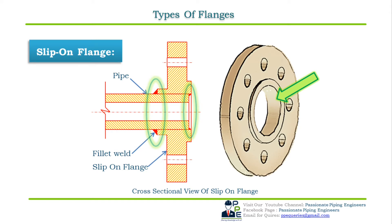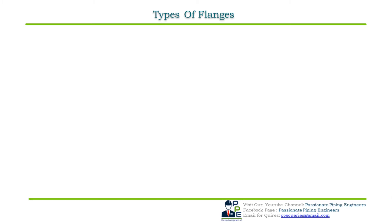When combining slip-on flanges with elbows or tees, it is not possible in general because fittings like elbows and tees have no straight ends to complete the slide. They can be used with long tangent elbows and reducers, but this is not general practice. Slip-on flanges are preferred in low pressure, low temperature applications up to 200°C and in non-cyclic conditions.